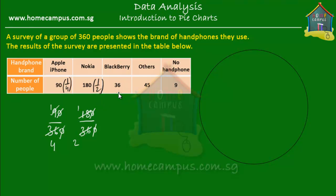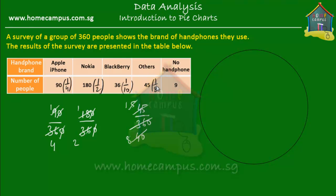Similarly, BlackBerry is quite easy: 36 out of 360, which means one-tenth of the whole group used BlackBerry. For other brands, 45 out of 360 — that's 5 over 40, or simplified, one-eighth of the whole group used other brands. And 9 out of 360 people didn't use any handphones at all — that's one-fortieth of the whole group.